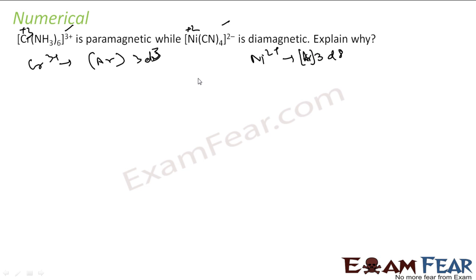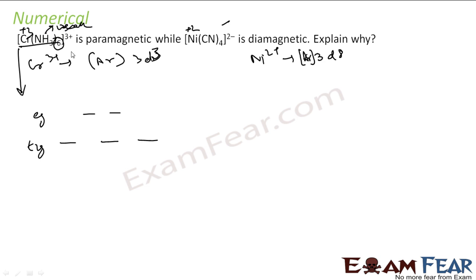For Cr(NH₃)₆³⁺, the coordination number is 6, so we use octahedral splitting with t₂g and eg levels. NH₃ is a weak field ligand. With 3 electrons, the hybridization is d²sp³, using two d orbitals, one s, and three p orbitals to accommodate 6 electron pairs. This complex is paramagnetic.